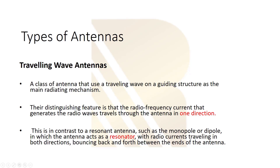Another type of antenna is traveling wave antennas. These antennas use a traveling wave on a guiding structure as the main radiating mechanism. The most important feature is that they use radio waves that travel through the antenna in one direction. The difference from other antennas is that other antennas act as a resonator with currents traveling in both directions, but in this antenna the current travels only in one direction.